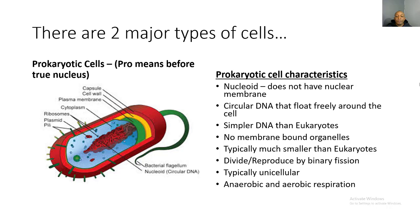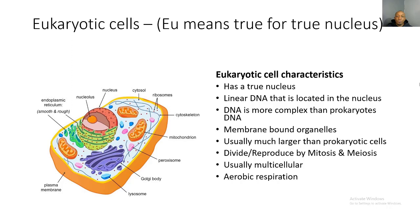Prokaryotic cells are typically much smaller than eukaryotic cells. They divide and reproduce by binary fission, and they are typically unicellular, meaning they usually only have one cell. They can survive through both anaerobic and aerobic respiration — anaerobic means they can survive without oxygen, while aerobic means they need oxygen in order to survive.